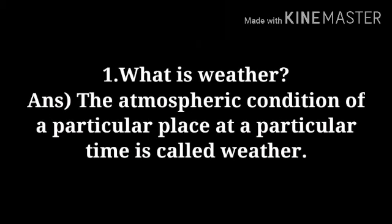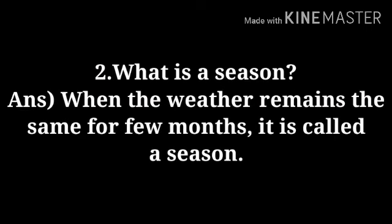Now let us do answer the following questions. Number 1: what is weather? Answer: the atmospheric condition of a particular place at a particular time is called weather. Number 2: what is a season? Answer: when the weather remains the same for few months, it is called a season.